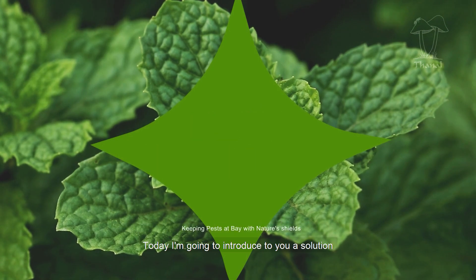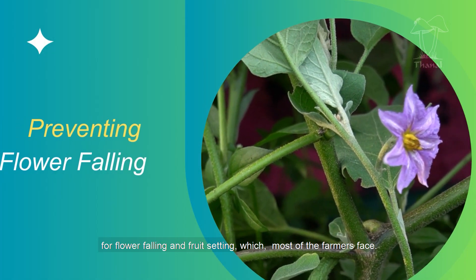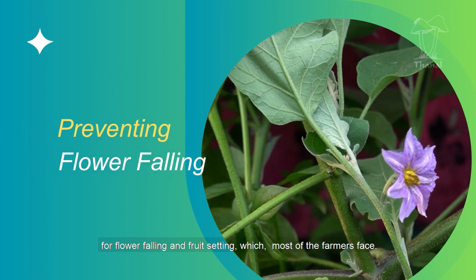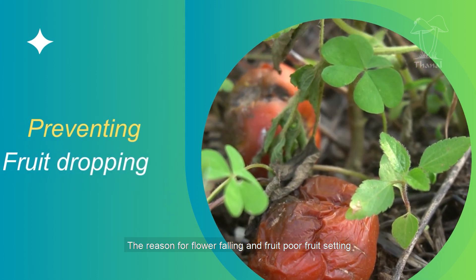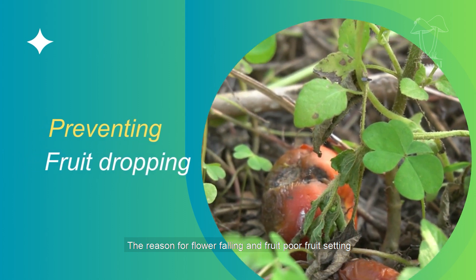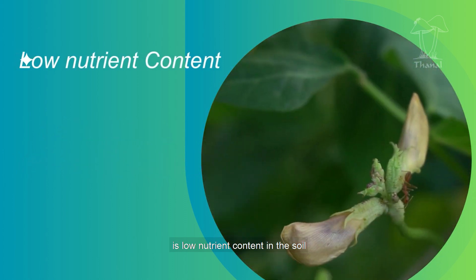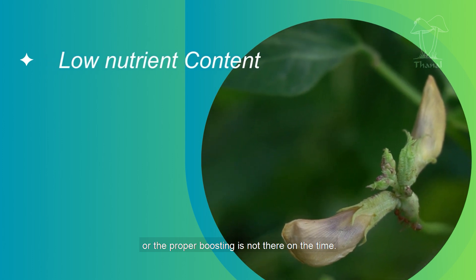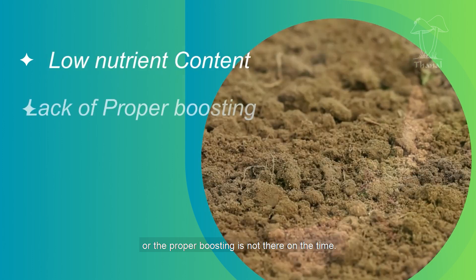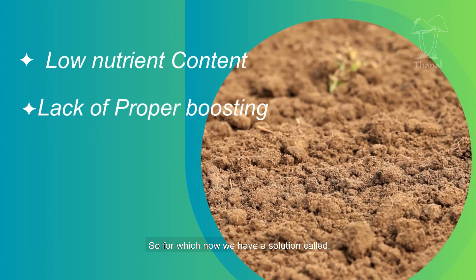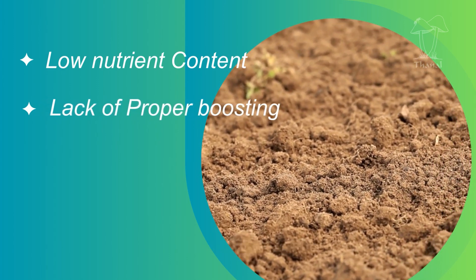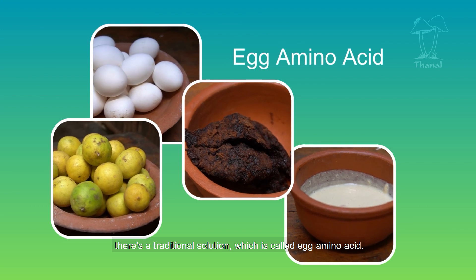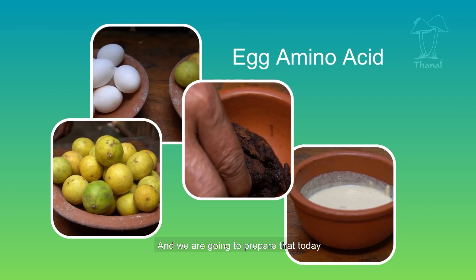Today I am going to introduce to you a solution for flower falling and fruit setting, which most farmers face. The reason for flower falling and poor fruit setting is low nutrient content in the soil or improper boosting not done on time. For this, we have a traditional solution called egg amino acid, and we are going to prepare that today.